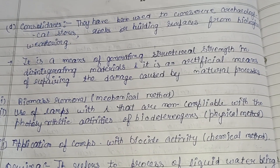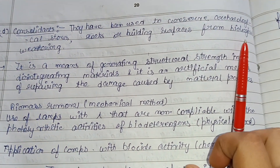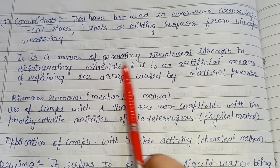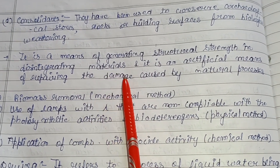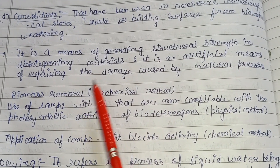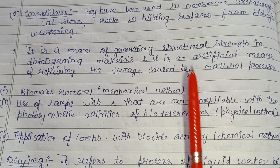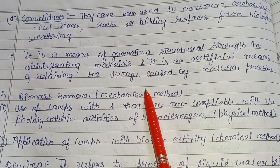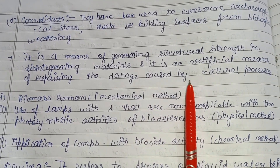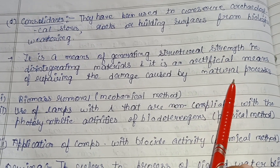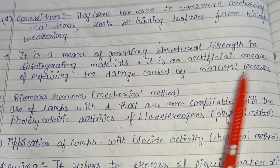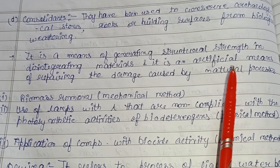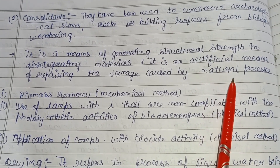Consolidants have been used to conserve archaeological stones, rocks, or building surfaces from biological weathering. This means generating structural strength in disintegrating material — it is an artificial means of repairing damage caused by natural processes. Under consolidation, we provide structural support: if any building, monument, or archaeological source has been disintegrated by weathering or precipitation and increased temperature, we repair them artificially and prepare them to resist further bio deterioration.